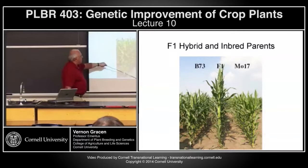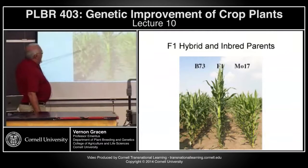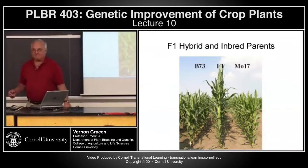Just to show you in picture form: this was a very popular hybrid, probably planted on 60% or more of the U.S. maize acreage in its day — the B73 line crossed with the Missouri 17 inbred line, producing the F1 hybrid.